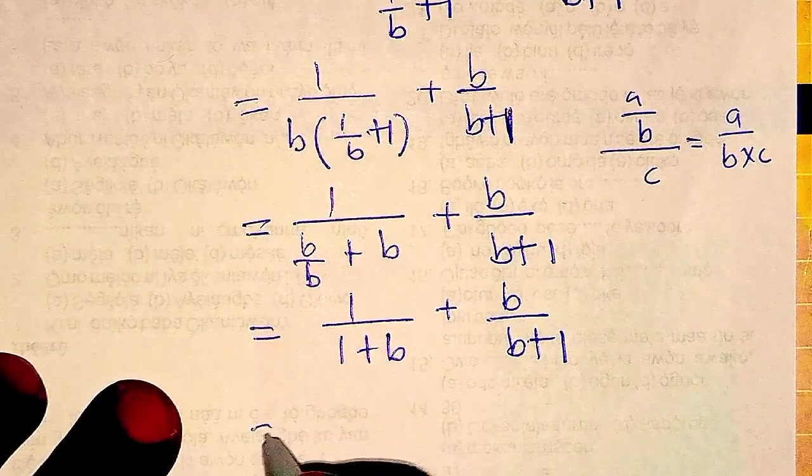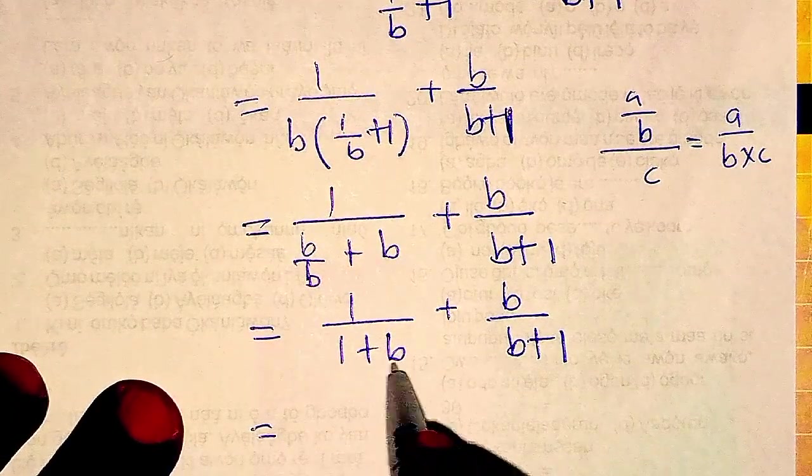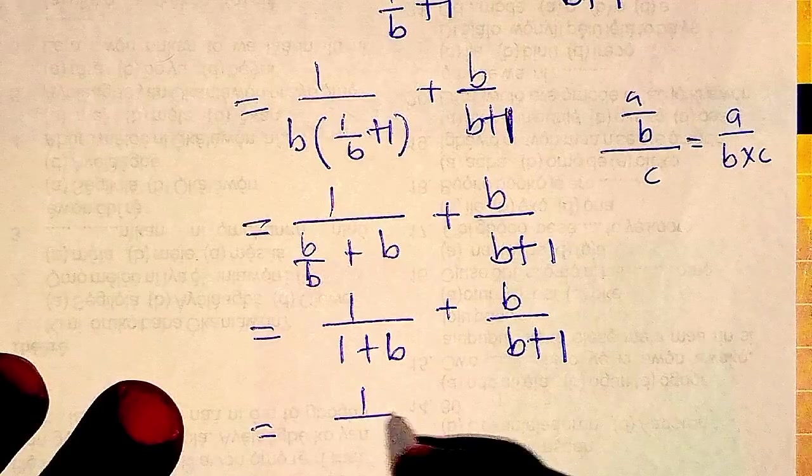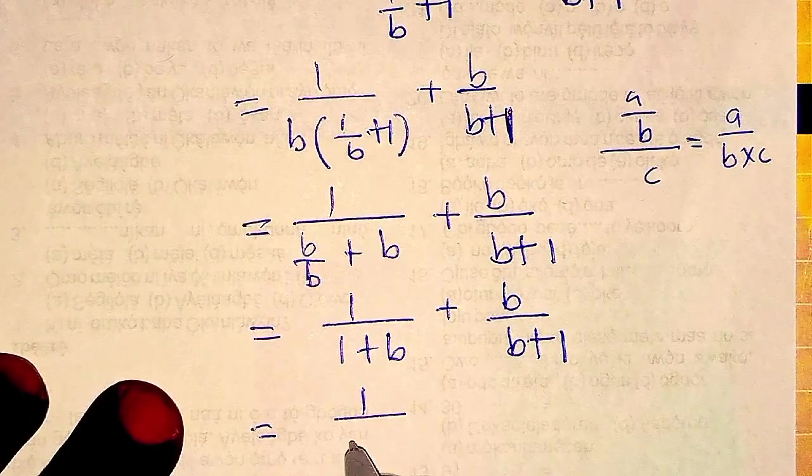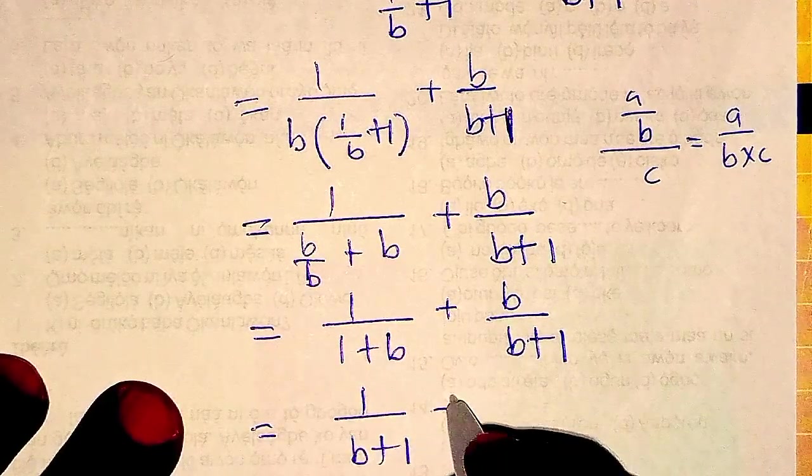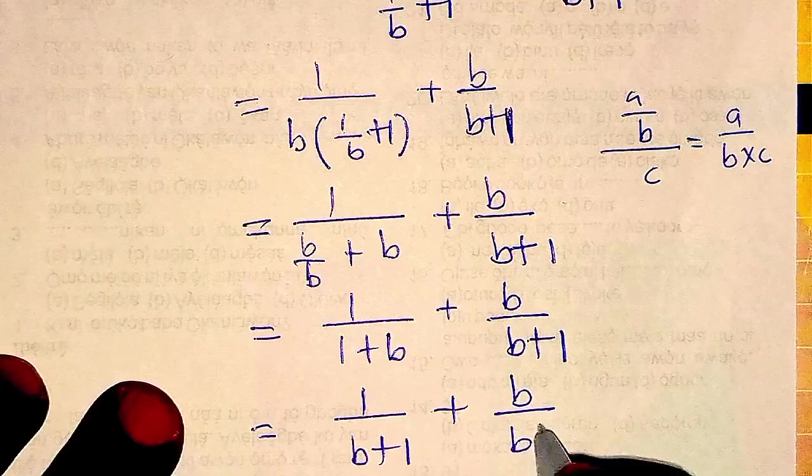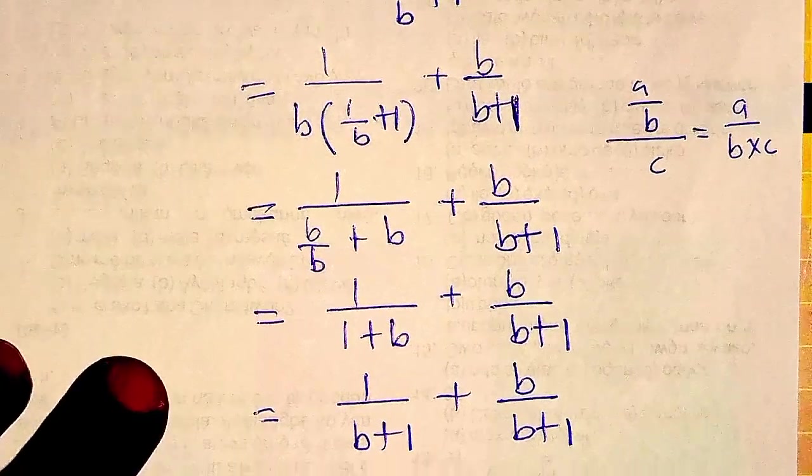So you know that, we can actually write this, 1 plus B and B plus 1 is the same thing, we can have 1 over B plus 1, plus B over B plus 1.